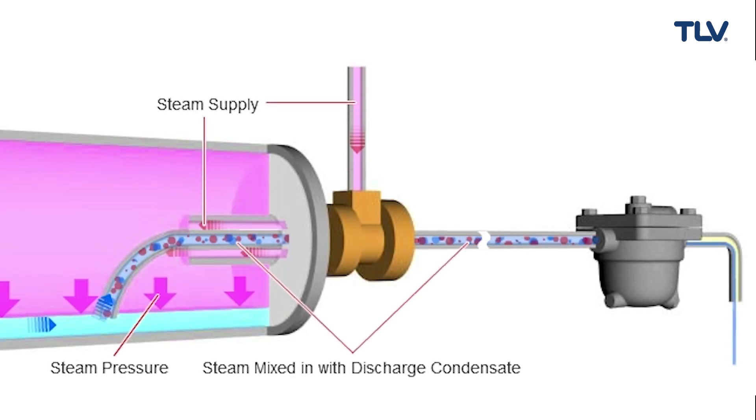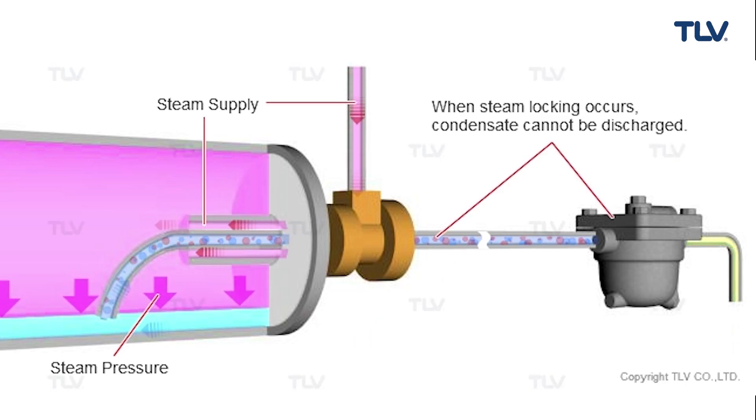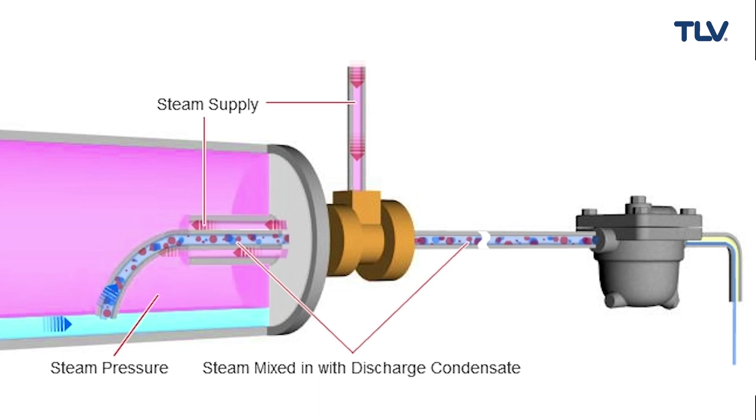When equipment configuration causes steam locking, one solution is to first discharge the steam condensate mixture into a receiver, such as a flash tank, before discharging condensate through a steam trap. The separated steam should then be returned to the heat exchanger for reuse.